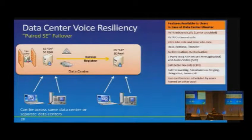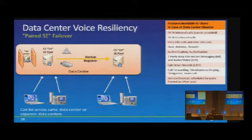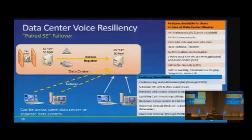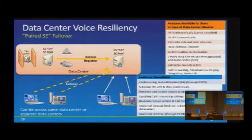For simplified HA with two Standard Edition servers and pool-level failover, what doesn't work is the same: conferencing auto attendant, scheduling new conferences, call forwarding using do-not-disturb presence, and voicemail retrieval through PSTN. You get basic failover functionality but not complete functionality when failing over from SE to SE.